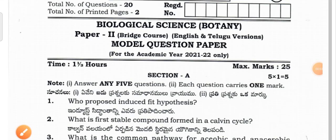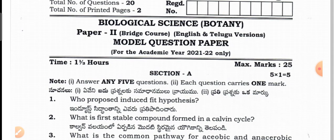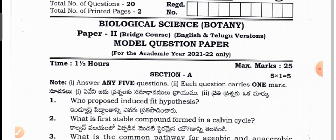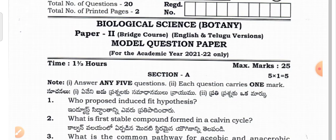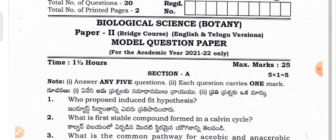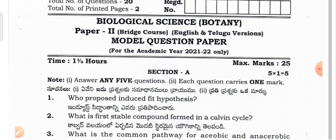Good morning and welcome back to my channel. In this video I would like to show the latest model question paper for the academic year 2021 to 22, for Bridge Course Second Year Students in the Biological Sciences — Botany — for Telugu Medium students in Telangana. This syllabus is the same for Andhra Pradesh as well, so AP students can also follow along.